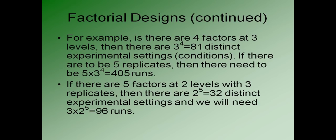For example, let's suppose that we have an experiment where there are four factors that we're interested in, and each of them takes on three distinct levels. That means that there are going to be 3 times 3 times 3 times 3, that is 3 to the 4th, which is 81 distinct experimental settings. If, in addition, you are going to run five replicates at each of these 81 settings, that means there's going to be 5 times 81, or 405 runs, so that's 5 times 3 to the 4th.